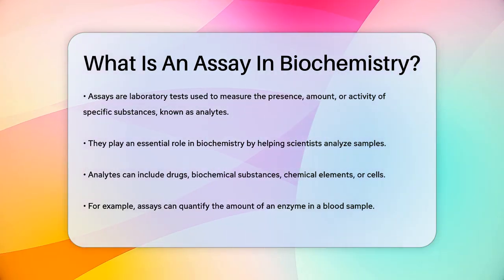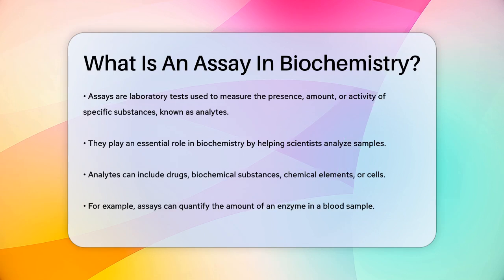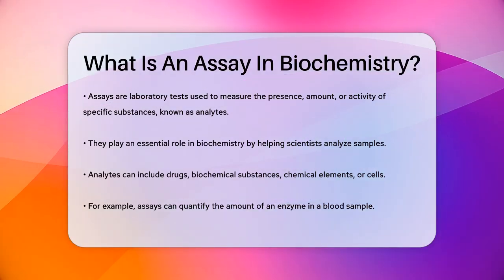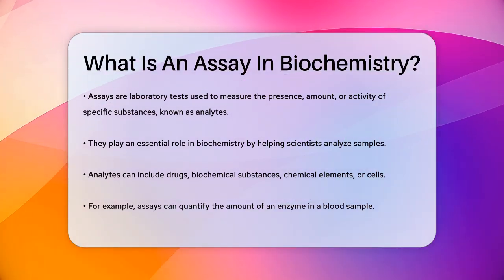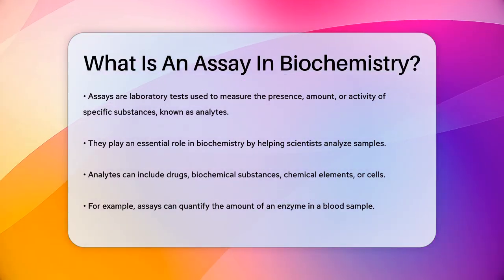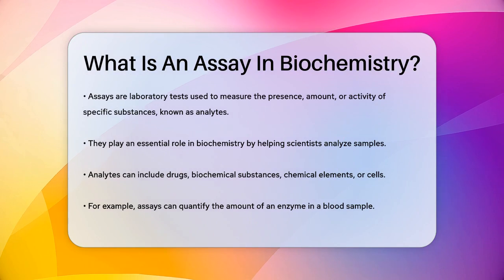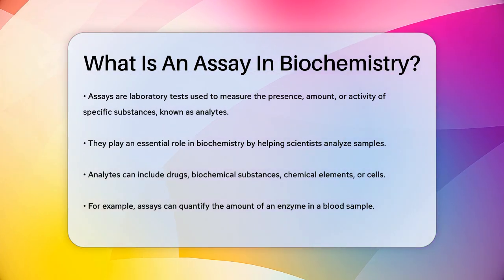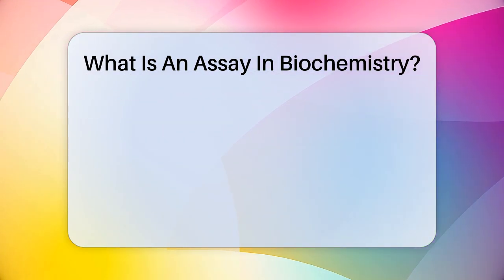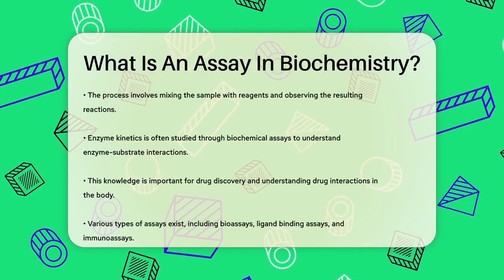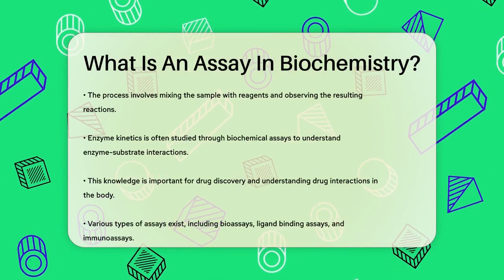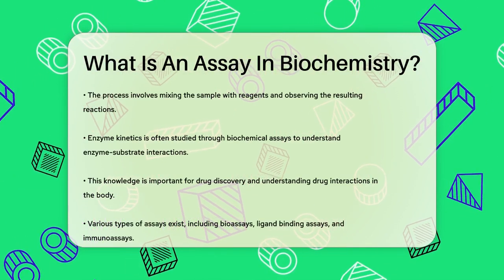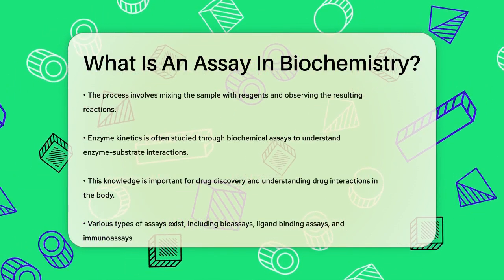Imagine you're trying to find out how much of a particular enzyme is in a blood sample. You would use an assay to quantify this. The process involves mixing the sample with certain reagents — substances that help in the measurement — and then observing the reaction or the changes that occur.